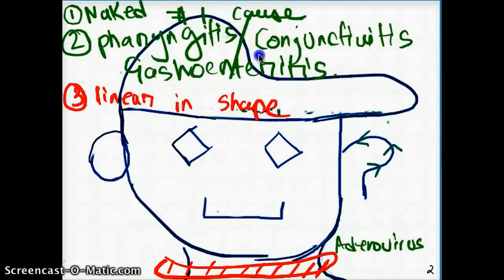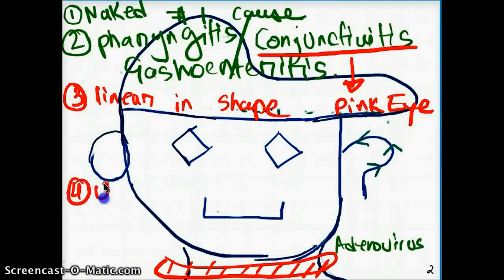The conjunctivitis can be written also as pink eye. Adenovirus is famous for causing pink eye. We can also have UTI from adenovirus. That's pretty much it. We don't have to go into too much details about adenovirus. These are the basic, basic points which needs to be remembered.